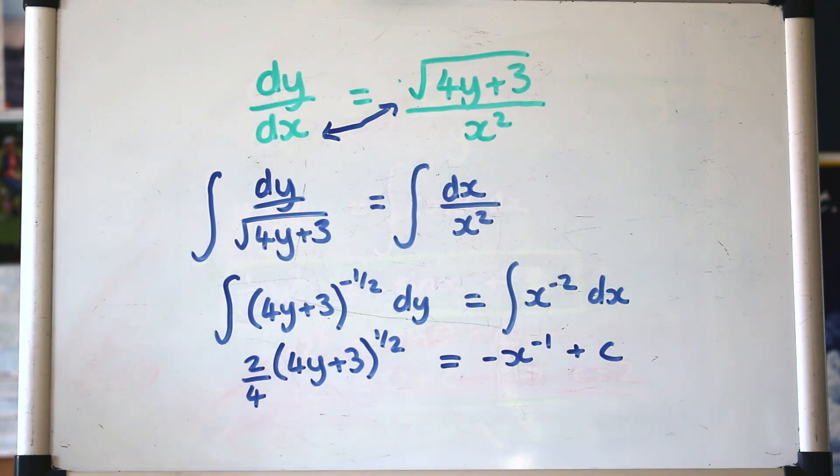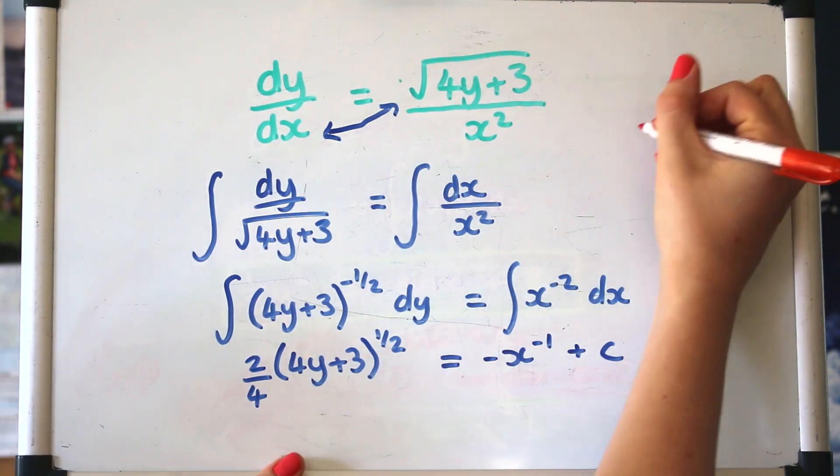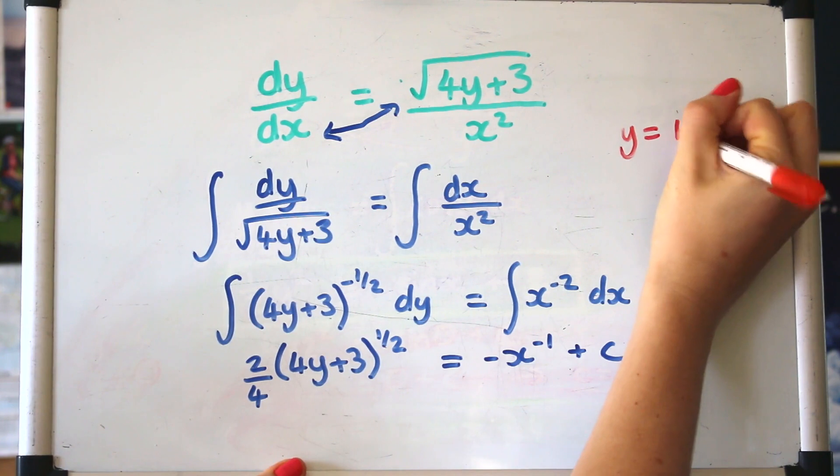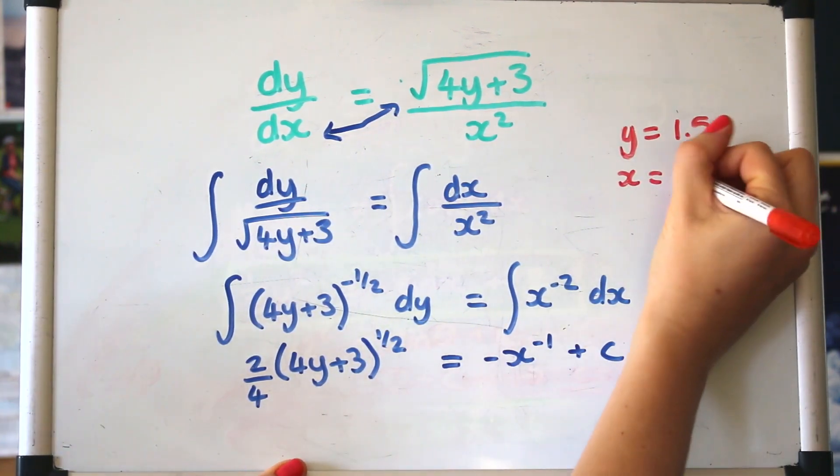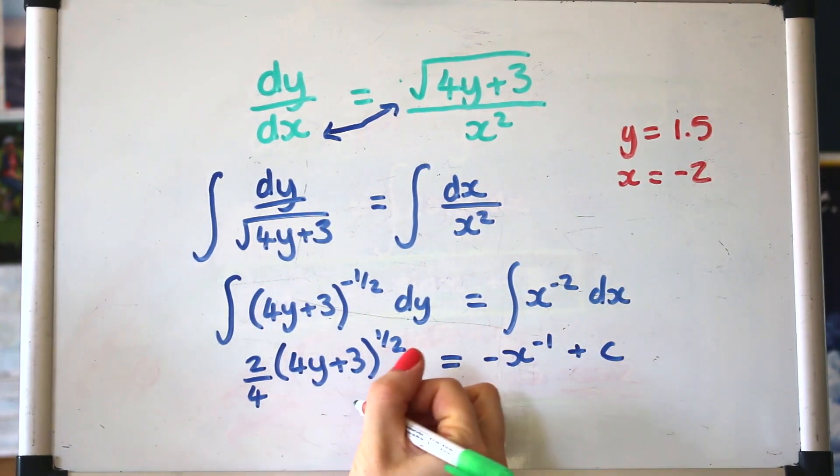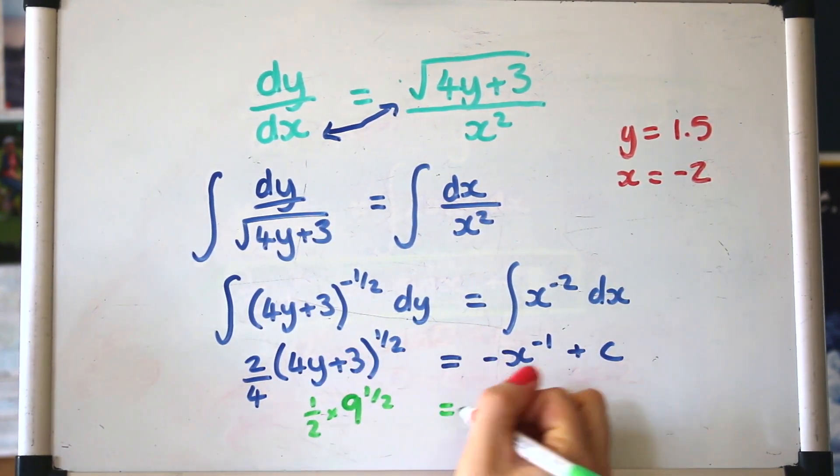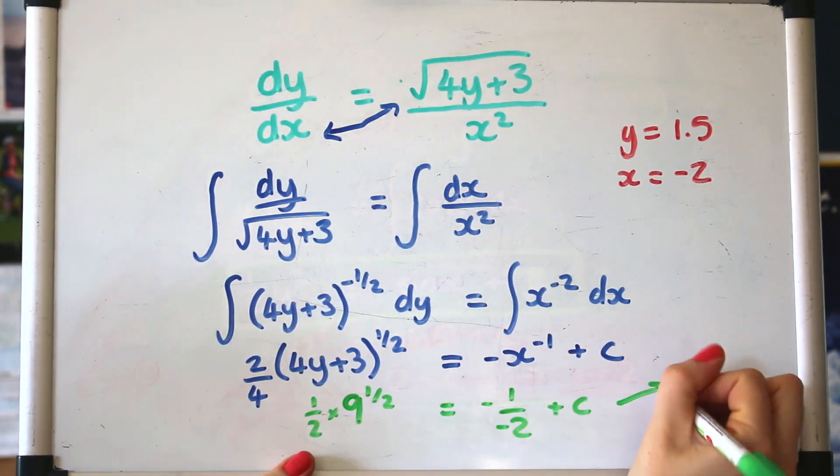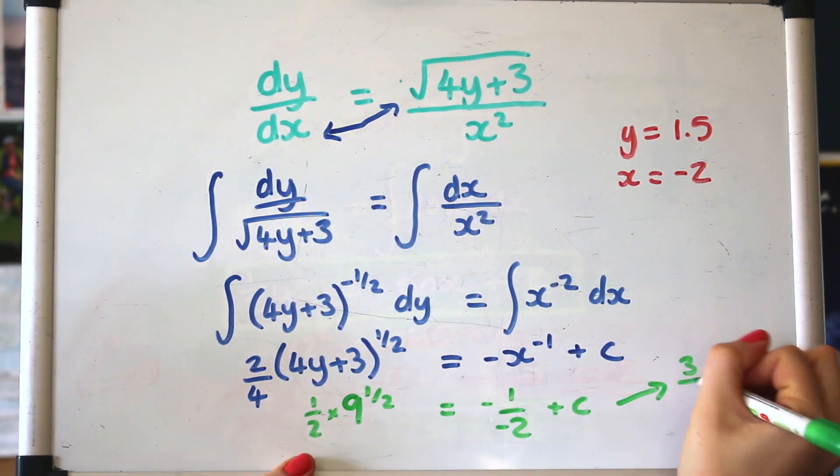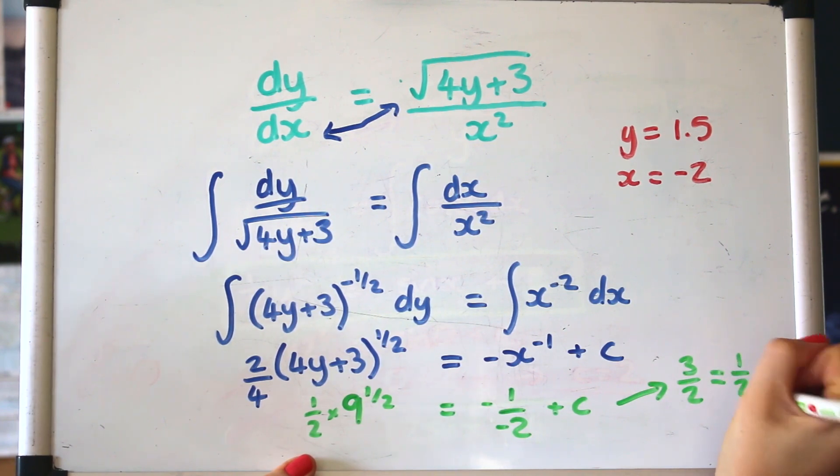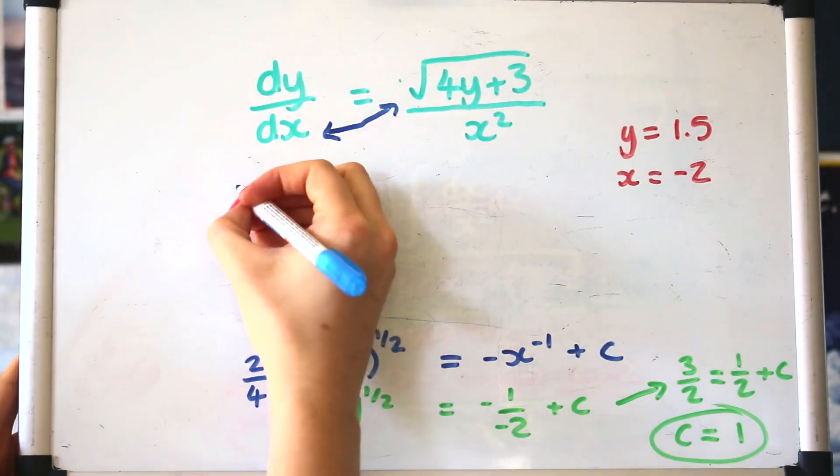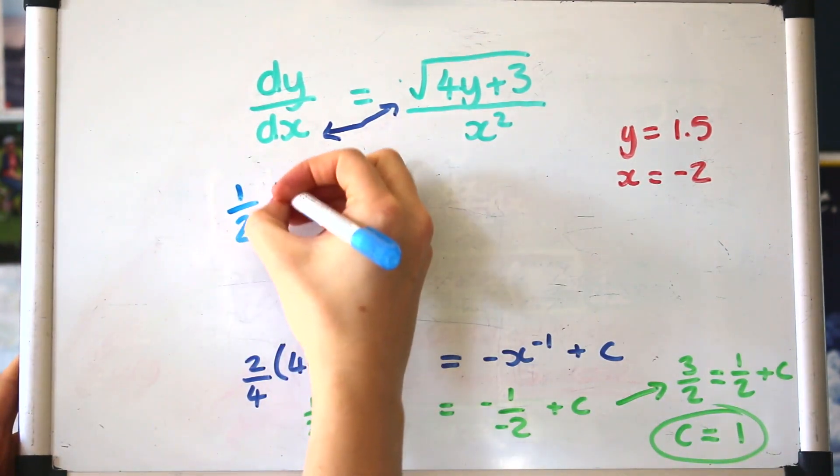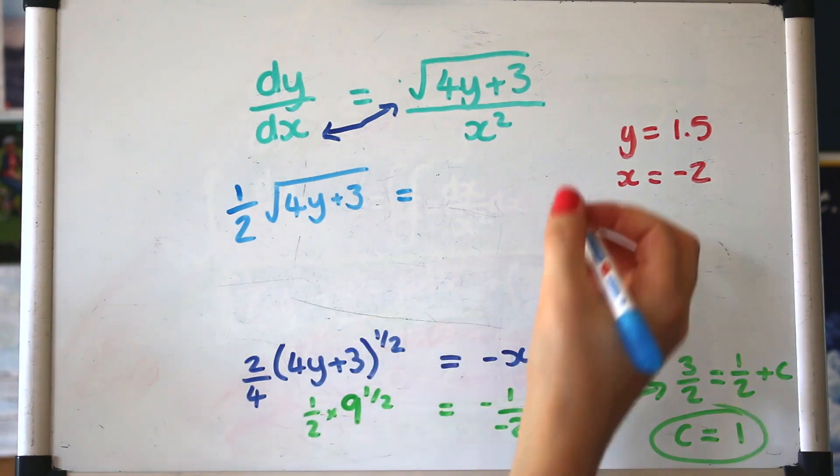I'm not going to tidy that up just now because let's have some more information and get a particular solution. So let's say that y is one and a half when x is minus two. So putting that in here. I've run out of space here, but that should be three over two on the left hand side. It's a half plus c, so c is one. So just giving myself a bit more room here.